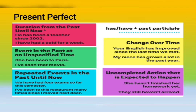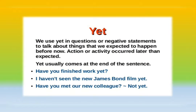The formula uses have/has plus the past participle. Another use is change over time: my niece has grown a lot in the past year. And uncompleted actions that are expected to happen: they still haven't arrived. Yet — we use it in questions and in negative sentences when we are expecting that something is going to happen. For example: have you finished your work yet? I haven't seen the new James Bond film yet.